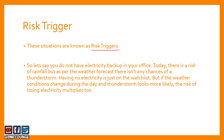Let's take an example. If your office does not have any electricity backup and the weather forecast says there is a chance of heavy rainfall, you could create a risk for your watch list that the office may not have electricity supply if this heavy rainfall turns into a thunderstorm. So losing electricity is a low priority risk on your watch list — the weather forecast only says heavy rainfall, it doesn't say anything about a thunderstorm.